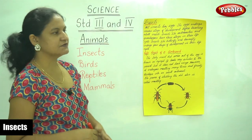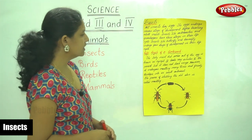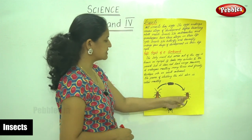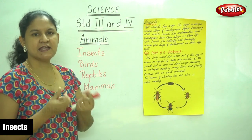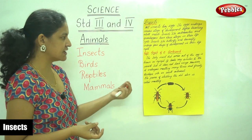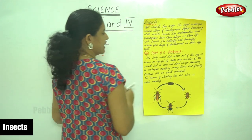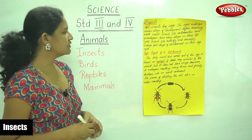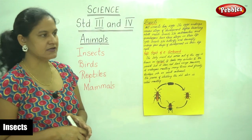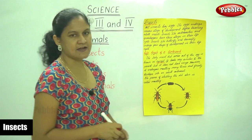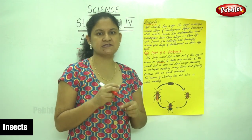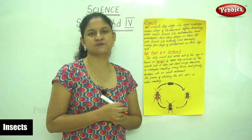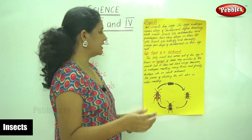Let us see the life cycle of a cockroach. The baby insect that comes out of the egg is known as the nymph. When the egg hatches, a baby insect comes out and that baby insect is known as the nymph. It looks very similar to the parent but it does not have wings.